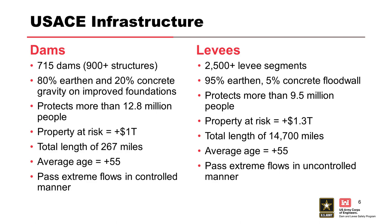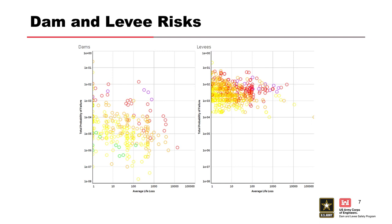You can see that play out in our risk assessments. What you see here is what we call an FN plot, where on the y-axis you have the probability of failure — in any given year, the likelihood of a dam or levee failing — and then the associated consequences, in this case the loss of life associated with that failure. Each dot on the left represents one of our dams; each dot on the right represents one of our levees. We've done a risk assessment of some level for every single dam and levee in our portfolio, and this is what it's starting to look like.